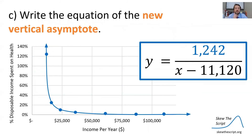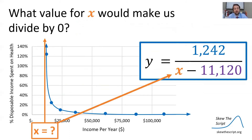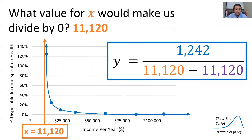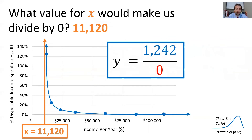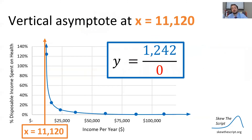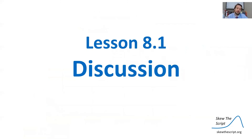Now we can write the equation of the new vertical asymptote. What value of x makes us divide by zero? Well, x − 11,120 = 0 when x = 11,120. So if x = 11,120, we get zero in the denominator, which means we have a vertical asymptote at x = 11,120. The graph has been translated to the right by 11,120 units.